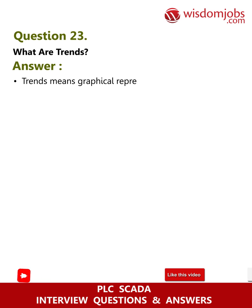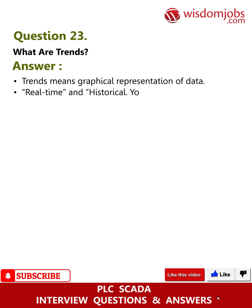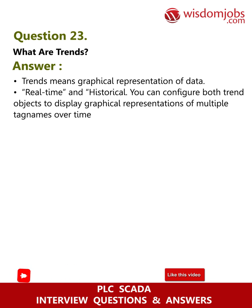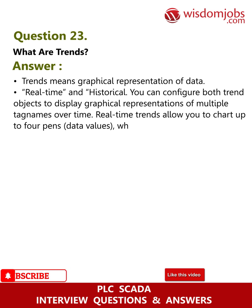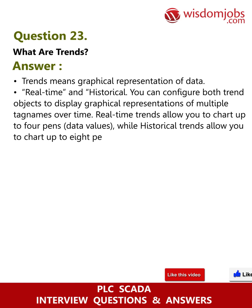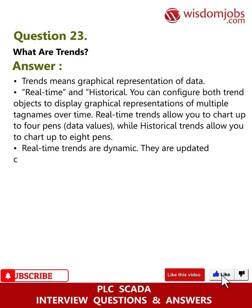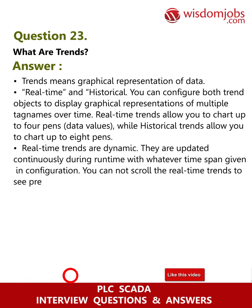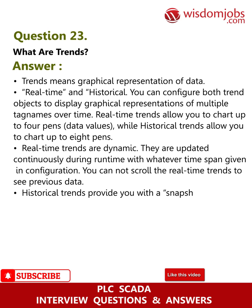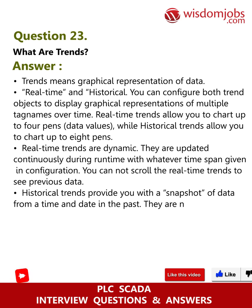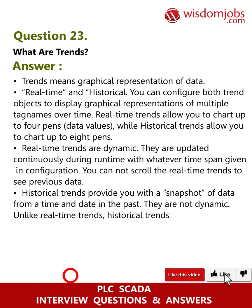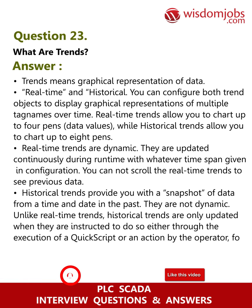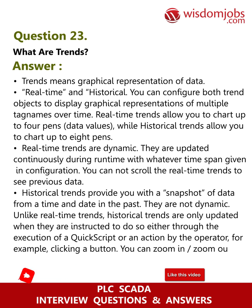Question 23: What are trends? Answer: Trends means graphical representation of data — real-time and historical. You can configure both trend objects to display graphical representations of multiple tag names over time. Real-time trends allow you to chart up to four pens (data values), while historical trends allow you to chart up to eight pens. Real-time trends are dynamic — they are updated continuously during runtime with whatever time span is given in configuration; you cannot scroll real-time trends to see previous data. Historical trends provide a snapshot of data from a time and date in the past; they are only updated when instructed, either through a quick script or an operator action such as clicking a button. You can zoom in and zoom out on trends and also access previous data.